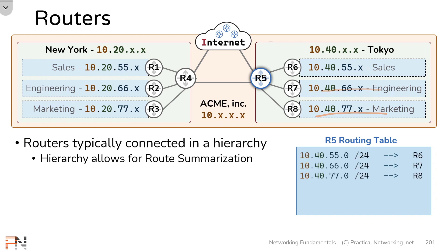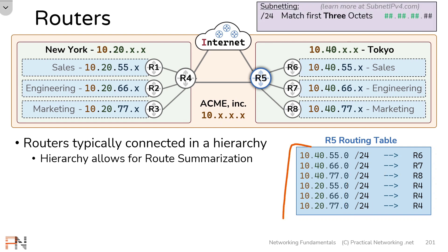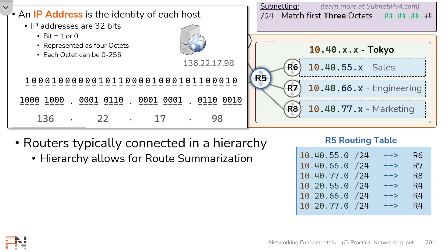There'll be three networks to account for the three teams in Tokyo pointing to routers 6, 7, and 8 respectively, and three more networks accounting for the teams in New York each pointing to router 4. Now I want to quickly pause and talk about this slash 24. When we say slash 24 we mean that these routes are going to match on the first three octets of a destination IP address. This slash 24 refers to the bits in the IP address. An IP address is simply 32 bits which we break up into chunks of eight, or four different octets, and we represent each of those octets as a decimal number. When we say slash 24 we are saying we're going to match on the first 24 bits — eight there, another eight brings us to 16, another eight brings us to 24 — and that's what we mean when we say a slash 24 will match on the first three octets.